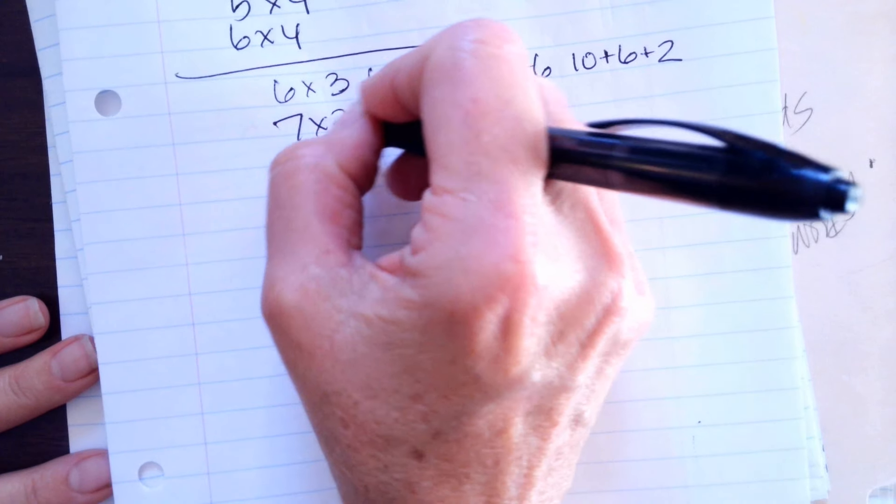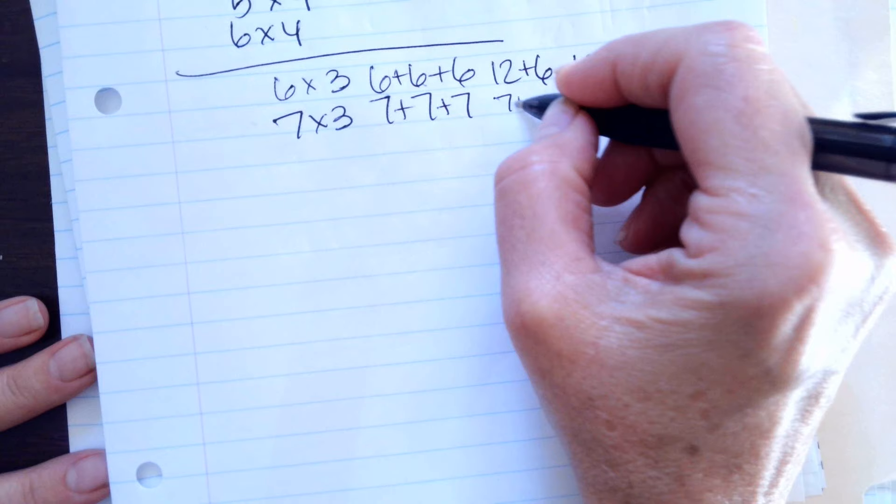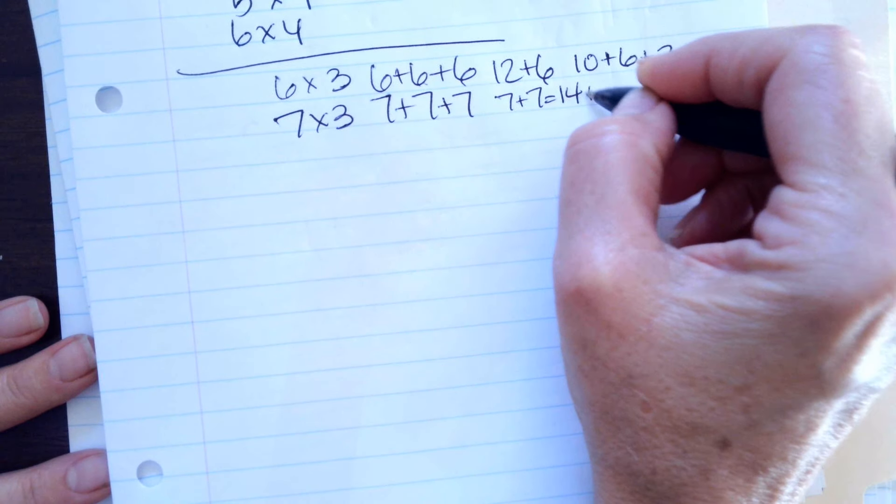7 times 3 is 7 plus 7 plus 7. I know 7 plus 7 is 14 and 14 plus 7.